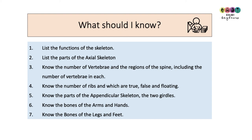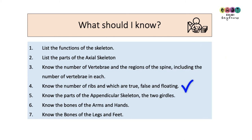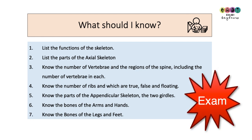So what should you know so far? Make sure you can list the functions of the skeleton, know the parts of the axial skeleton using that little diagram, know the number of vertebrae and the regions of the spine using the rhyme and the phone number, know which ribs are true, false and floating ribs and why, and know the parts of the appendicular skeleton — the two girdles and the bones of the arms, hands, legs and feet. You'd be surprised how often this part of the chapter gets examined.